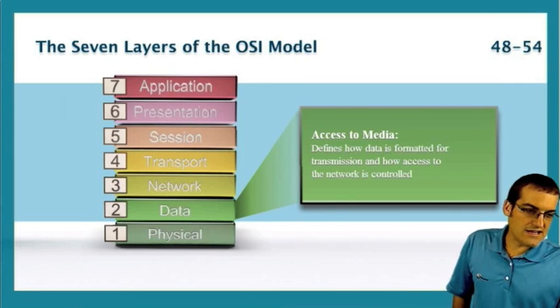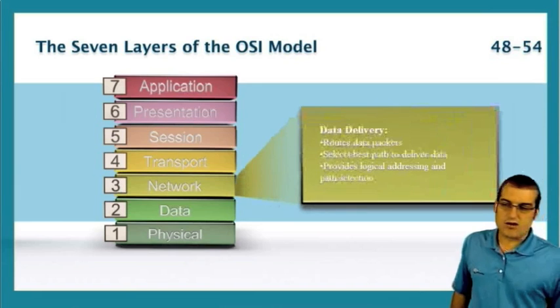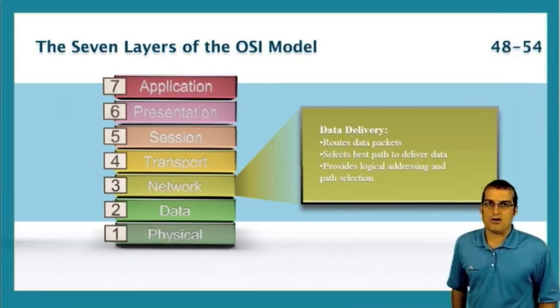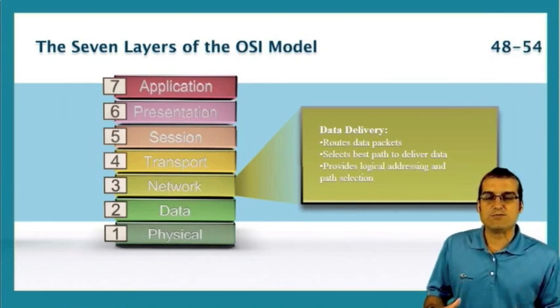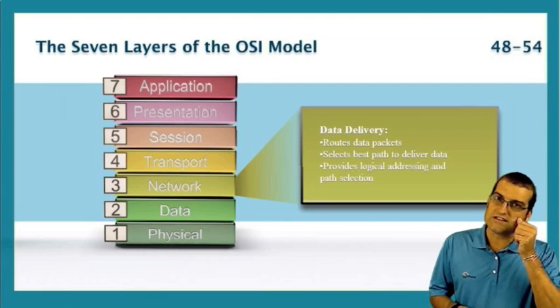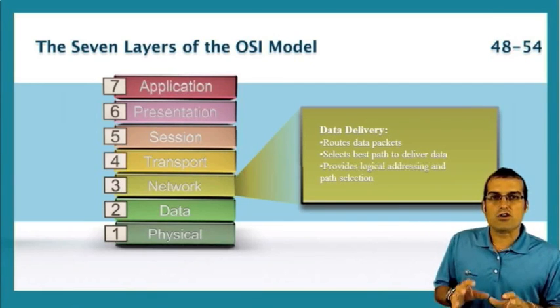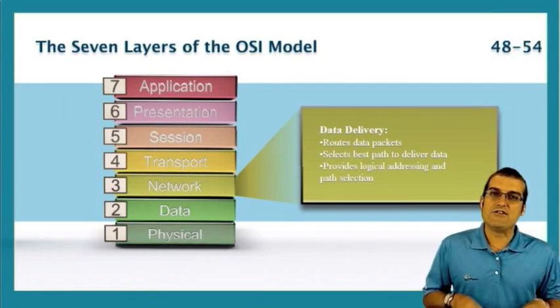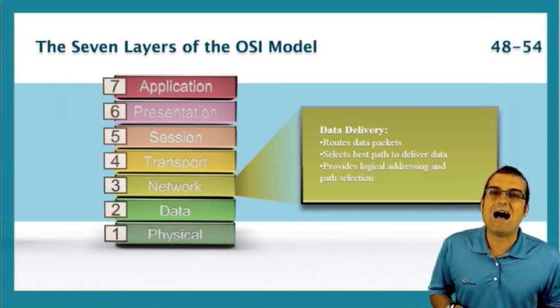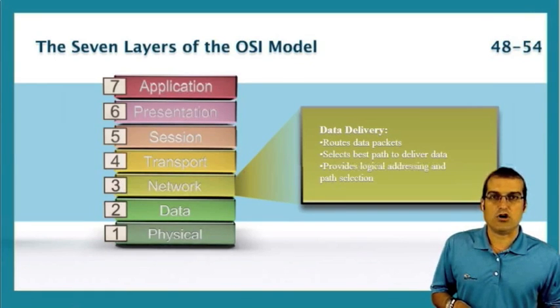The next layer is very, very important. The next layer is the network layer. This is where we are going to spend most of our time in this class. At the network layer, layer three, we have a very important protocol at work called IP, internet protocol.